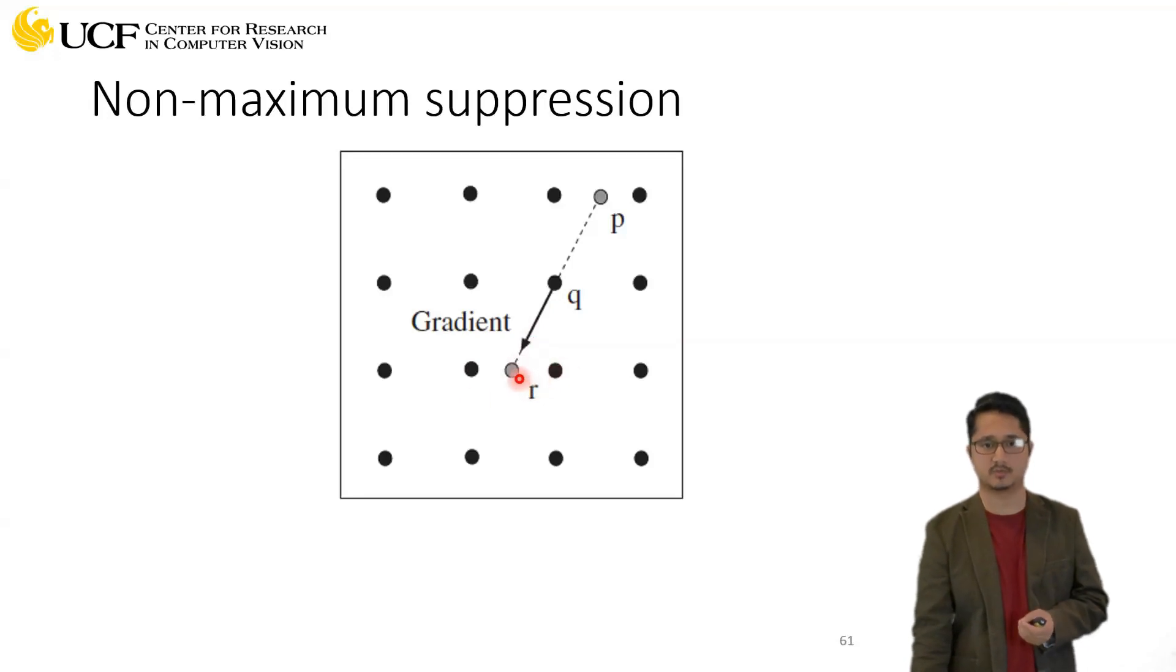So in this case, r will be a weighted average of this pixel and this pixel. Similarly, p will be a weighted average of this pixel and this pixel. Then you will compare the values of p and q and q and r, and depending upon the result, you will say q is an edge or not.